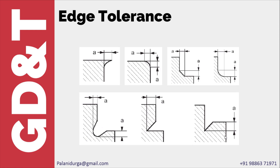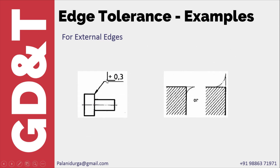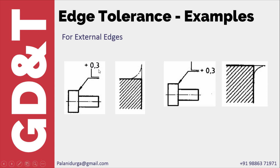Let's take external edges first as an example. Here plus 0.3 is given in the center for the external edge. The positive sign tells that a burr is allowed, and since the dimension is in the center, the burr can be either horizontal or vertical. If the tolerance value is exactly in line with the vertical line, the burr can be in the vertical direction only. If it is placed horizontally, the burr is allowed only in the horizontal direction.